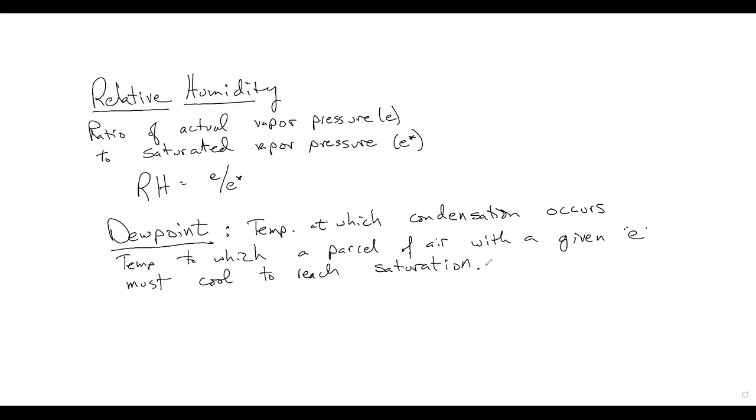So the units of dew point is temperature. And to kind of be a little more specific here, the temperature is a parcel of air with a given vapor or given water vapor content, given E, so water vapor content must cool to reach saturation. So that's kind of another way of thinking about it. We have this parcel of air. It has a certain humidity in it or water vapor content in it. What is the temperature? We have to cool it so that we reach saturating conditions at which point condensation occurs. Once we reach saturation, then that water vapor is looking to come out of the air and condense on some surface. And so it's often used as a measurement of water vapor content in the air. You have relative humidity. Dew point also gives you that kind of information.